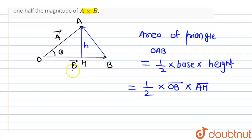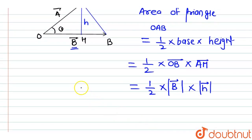But OB bar is indicated by B bar. So we can write it as one-half into mod of B bar into H bar. So here from triangle OAH,